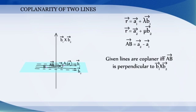The given lines are coplanar if and only if AB vector is perpendicular to b1 vector cross b2 vector. We know the condition for the vectors to be perpendicular is their dot product is zero.